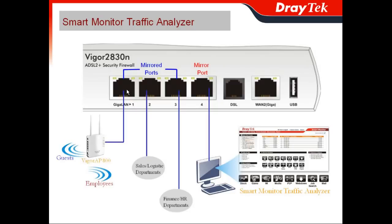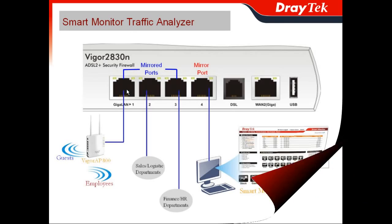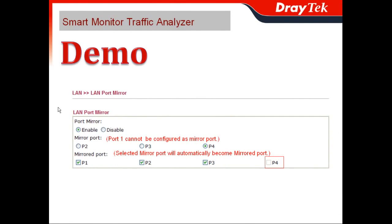Let's see the configuration. To configure Smart Monitor, go to LAN and then LAN port mirror. First, you enable the port mirror function, and then you choose the mirror port. Note that port 1 cannot be configured as the mirror port — you can see there is no choice for port 1. In my scenario, I choose port 4.